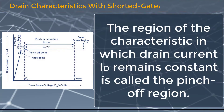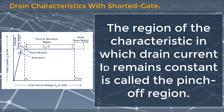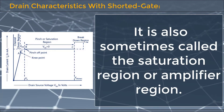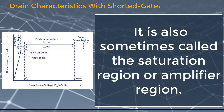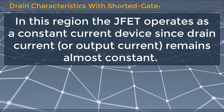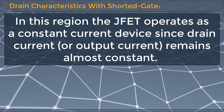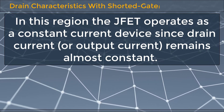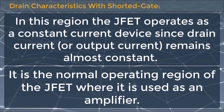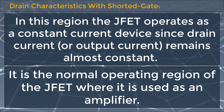The region of the characteristic in which drain current ID remains constant is called the pinch-off region. It is also sometimes called the saturation region or amplifier region. In this region, the JFET operates as a constant current device since drain current remains almost constant. It is the normal operating region of the JFET where it is used as an amplifier.